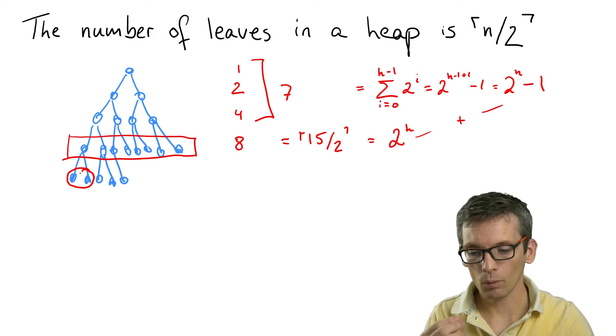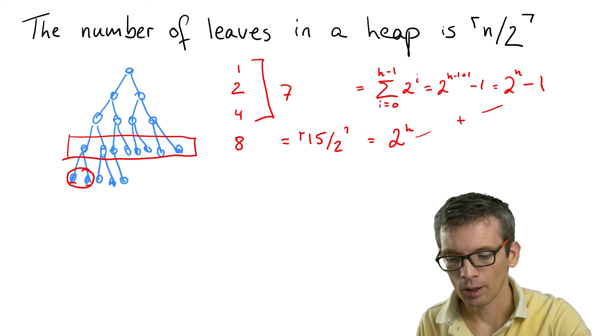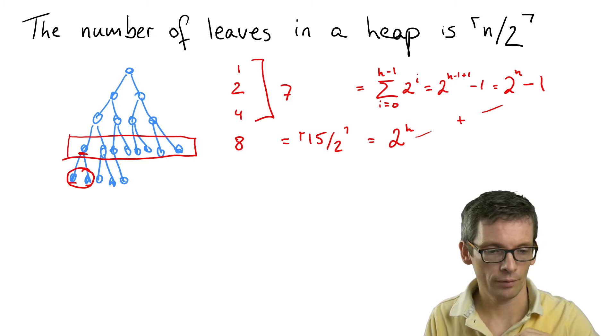The number of nodes goes up by two, but the number of leaves only goes up by one. So why is that the case? Because I add two leaves,